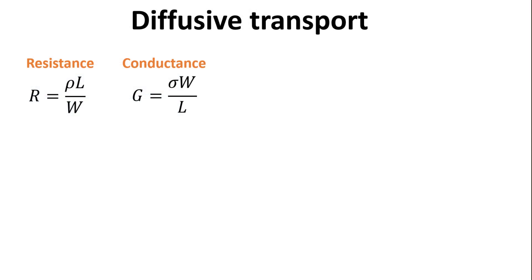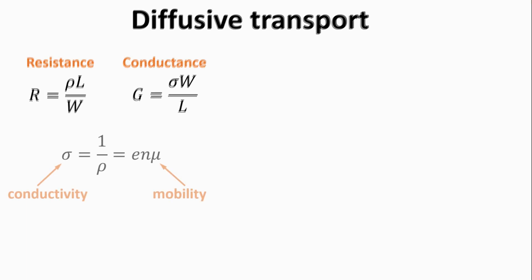Recall the classical definition of resistance in 2D, given by the material's resistivity rho multiplied by the device's aspect ratio. Conductance is the inverse of resistance, and the material's conductivity is the inverse of resistivity.